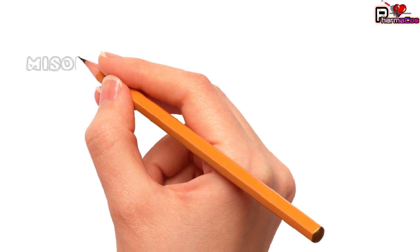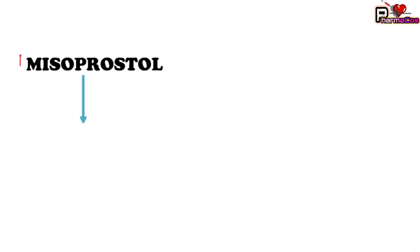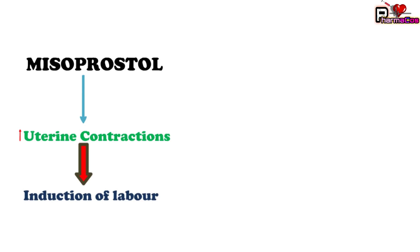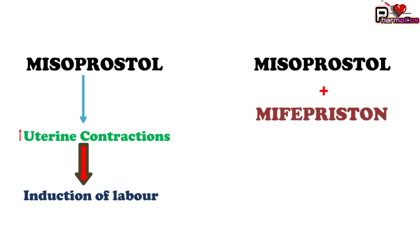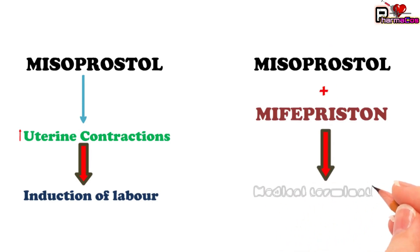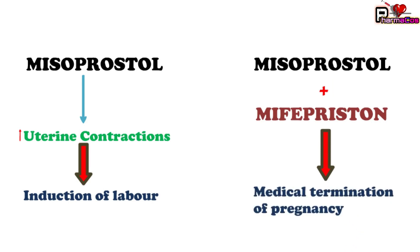Apart from this, misoprostol also has another pharmacological action — it can increase uterine contraction, so it is a uterine stimulant used to induce labor. When given in the first trimester, it can produce abortion in pregnant women. That is why misoprostol is combined with mifepristone, which is an anti-progestin; this combination is used for medical termination of pregnancy. Therefore, when misoprostol is indicated for NSAID-induced gastric ulcers, it should not be given to pregnant women.